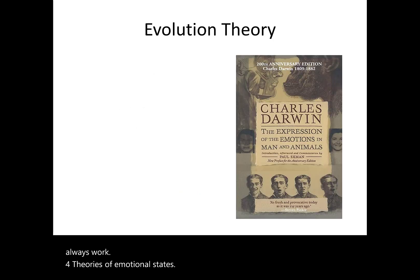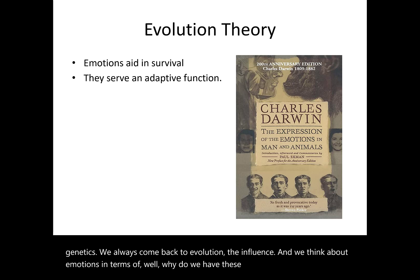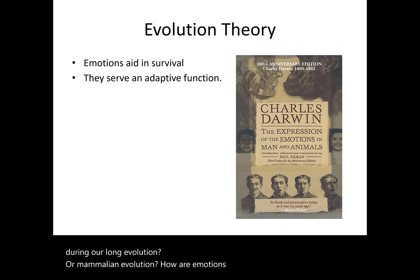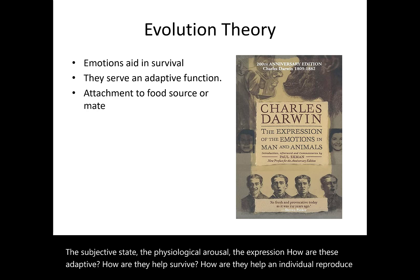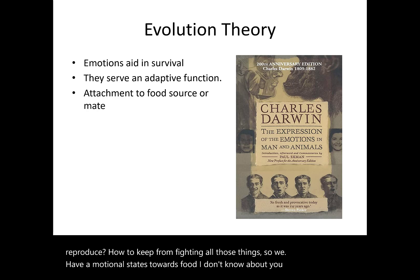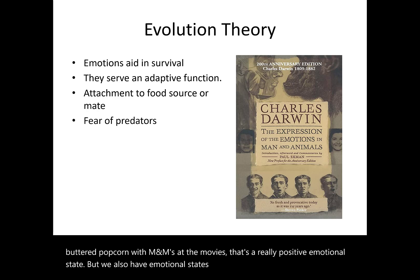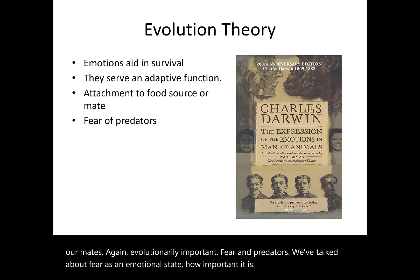We always come back to genetics and evolution when thinking about emotions. Why do we have these emotions? How did they help during our long mammalian evolution — the subjective state, physiological arousal, expression — how are these adaptive? We have emotional states towards food, emotional states that bond us to our children and mates, and fear of predators which helps us survive and remember where to go and where not to go.